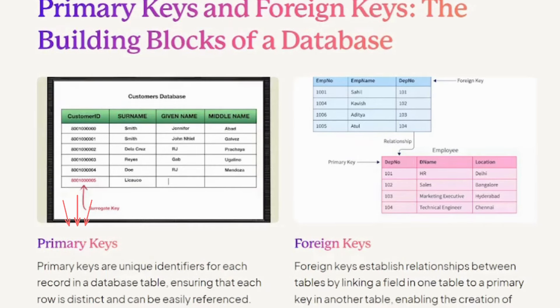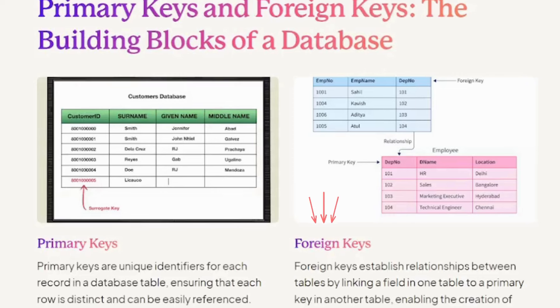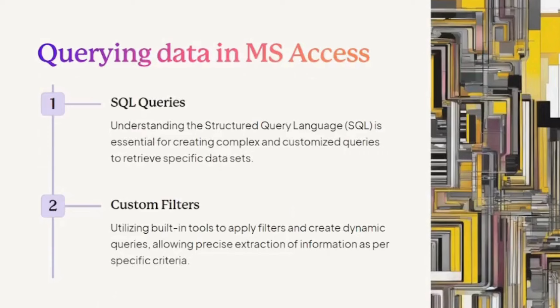Primary Keys are unique identifiers for each record in a database table, ensuring that each row is distinct and can be easily referenced. Foreign Keys establish relationships between tables by linking a field in one table to a primary key in another table, enabling the querying of data in MS Access.